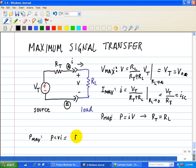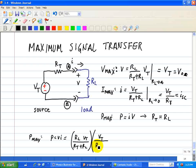That yields RL times VT all over RT plus RL. That came from the voltage divider. And when we short the circuit at the load, we have VT, RT plus RL, and that yields RL VT squared all over RL plus RT squared.